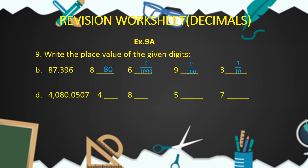Now let's come to part D. Here the decimal fraction is 4080.0507, and we have to find out the place value of 4, 8, 5, and 7. 4 is at the thousands place, therefore the place value of 4 is 4000. 8 is at the tens place, so the place value of 8 is 80. 5 is at the hundredths place, so the place value of 5 is 5 upon 100. And 7 is at the ten-thousandths place, so the place value of 7 is 7 upon 10,000.